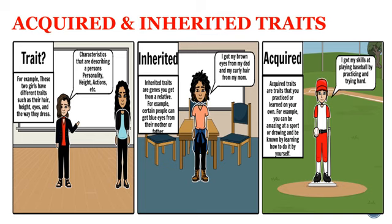Consider another example of how an individual cannot pass on to its progeny the experiences of its lifetime. If we breed a group of mice, all their progeny will have tails as expected. Now if the tails of these mice are removed by surgery in each generation, do these tail-less mice have tail-less progeny? The answer is no. It makes sense because removal of the tail cannot change the genes of the germ cells of the mice.